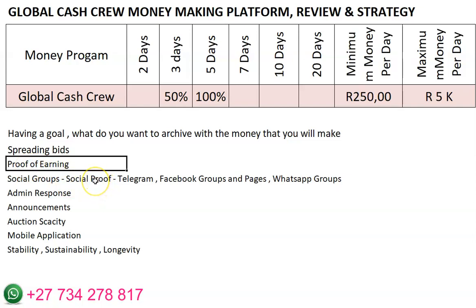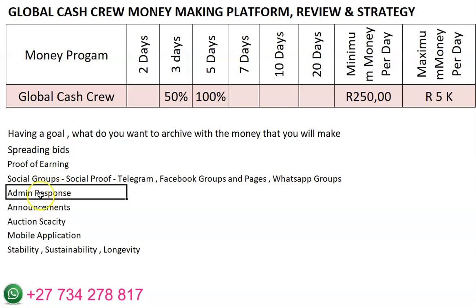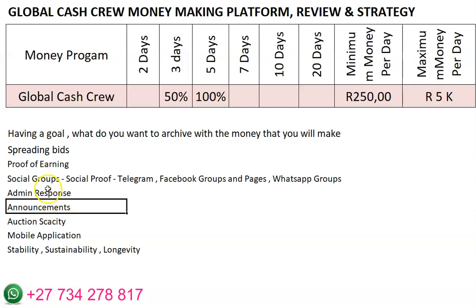You also need to be looking at proof of earning, which I will be helping you to look at when you join with my registration link and sponsor ID. I'll be able to add you to social groups which are Telegram, Facebook groups, Facebook pages, and WhatsApp groups. Admin is involved in all these social groups and you can contact them in any of these groups.